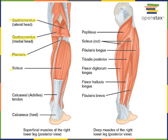Deep to gastrocnemius we see plantaris, and deep to plantaris — a very slender muscle — we see soleus, a very broad flat muscle. Gastrocnemius, plantaris, and soleus all share a common action and insertion: plantar flexion of the talocrural joint, with insertion onto the calcaneus via the calcaneal tendon, commonly referred to as the Achilles tendon.